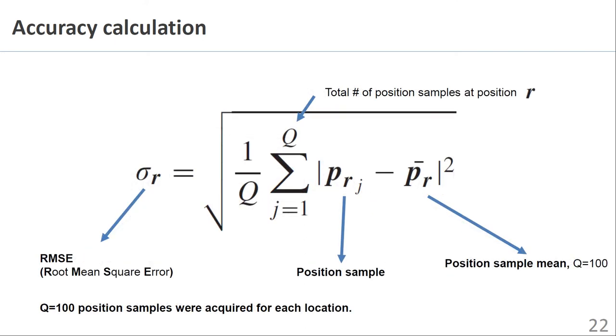Jitter is also calculated in an RMS sense, by comparing a set of 100 statically placed sensor positions with their mean value.